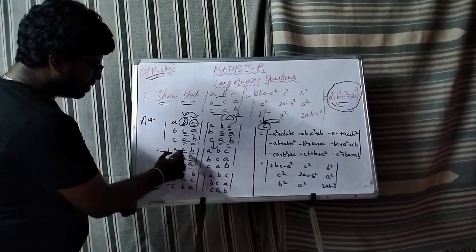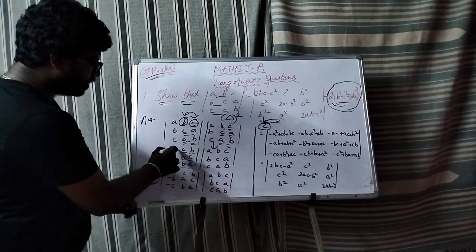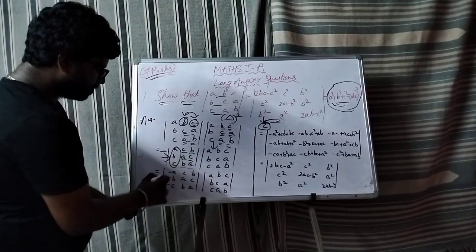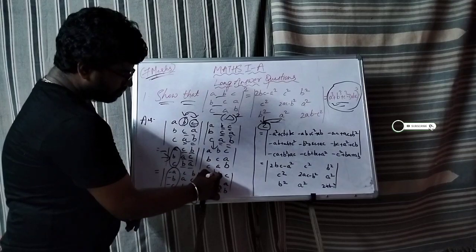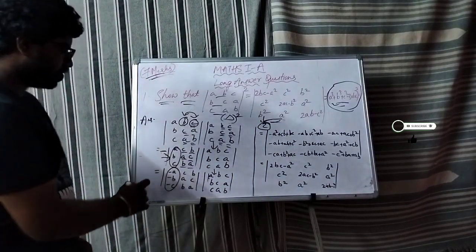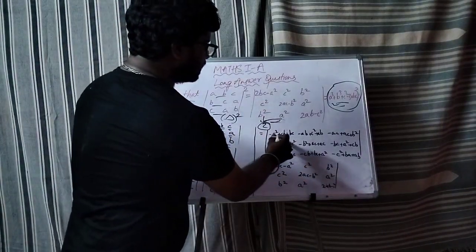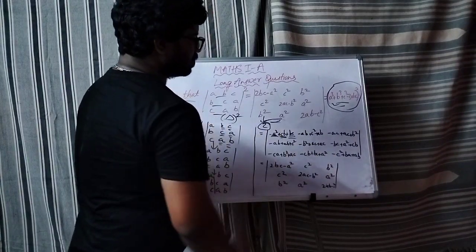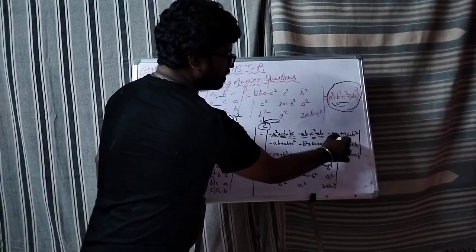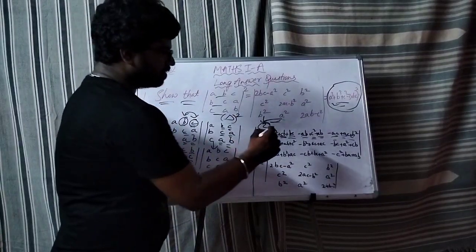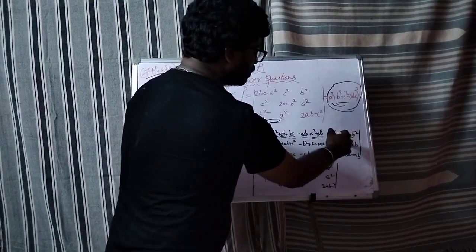When we interchange we get c, b, a, c and b. The minus only applies to the first column, so we get minus a, minus b and minus c. Then row into column gives minus a square plus bc plus cb. The plus ab minus ab cancel out, similarly plus ac minus ac.